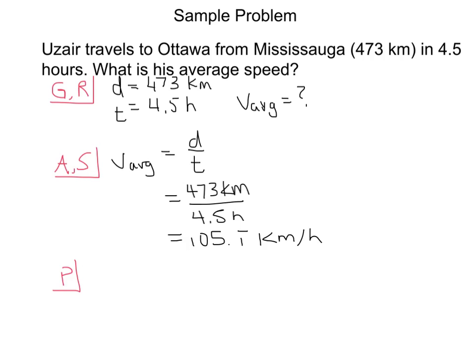Because we've got kilometers divided by hours here, so we end up with kilometers per hour. And if I'm going to use significant figures, I'm going to round this to two significant figures. So this ends up as 110 kilometers per hour.